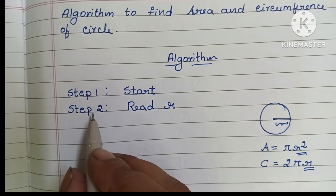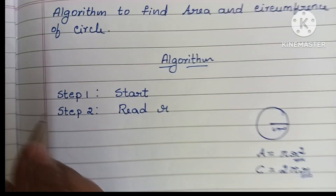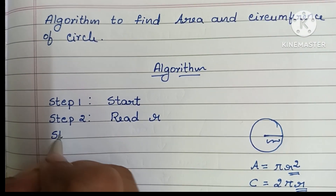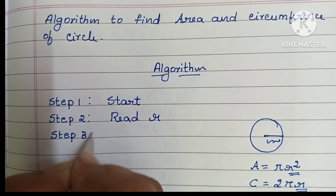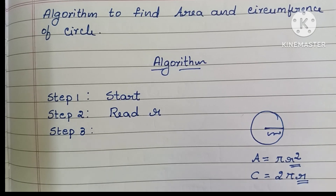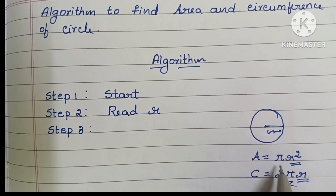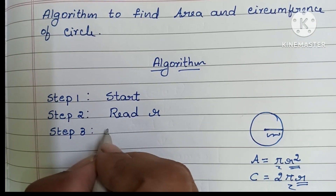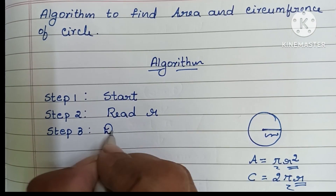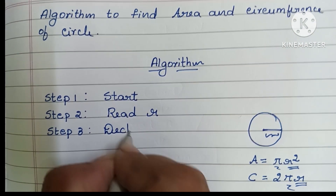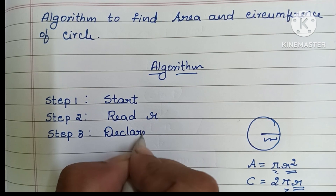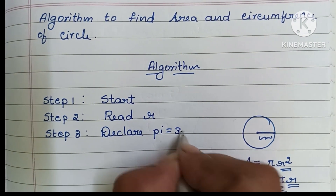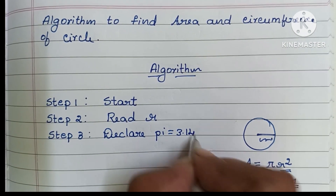In Step 2, we have to read the input value. In Step 3, we have to declare the value of pi. We know the value of pi, so here declare pi is equal to 3.14.